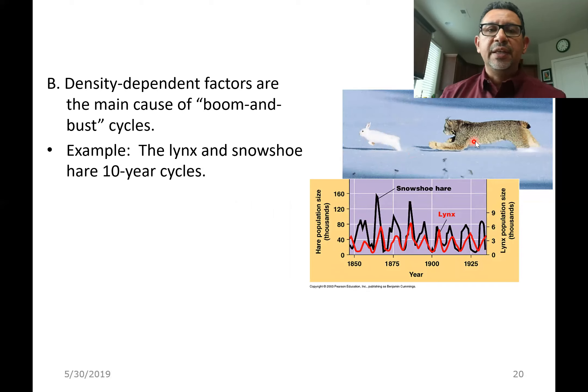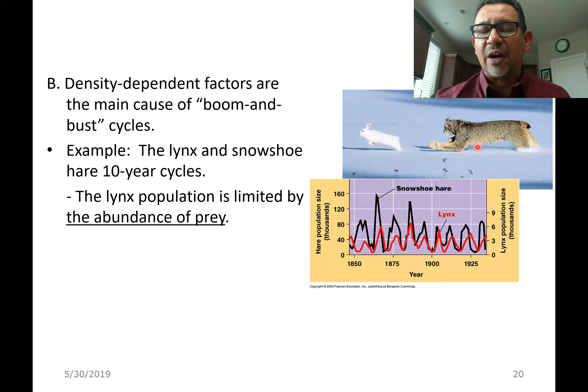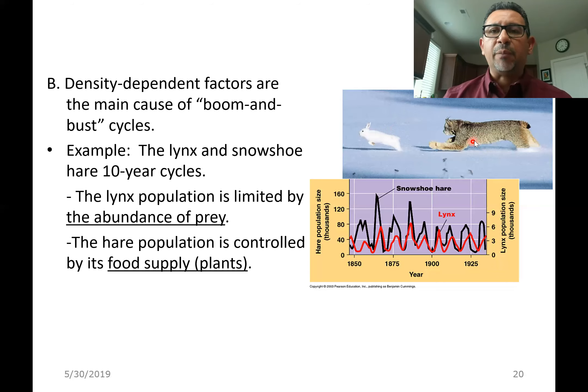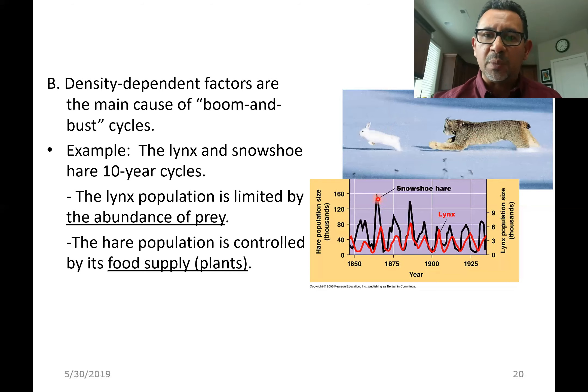Because of a mistaken understanding of nature, people at first thought it was the intensity of predation — how many snowshoe hares the lynx were eating — that was driving the hare population down. But a careful study of the dynamic between these two populations revealed that it didn't matter how many lynx were present in the environment; that was not the cause of the decline for the snowshoe hares. The snowshoe hare population is not controlled by predators, but is actually controlled by their own food supply. As the snowshoe hare population boomed, they ate all of their plant supply, and when there were no more plants, their own population crashed.